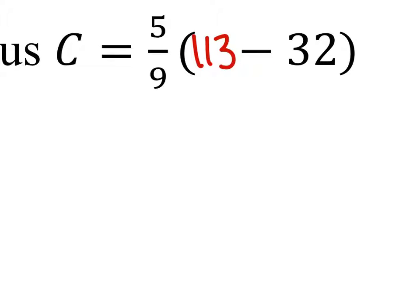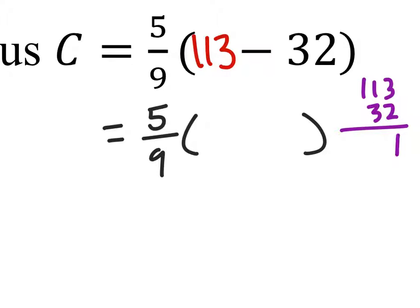By the order of operations, we'll need to do the parentheses first. So 113 minus 32. We can do it over here. 113 minus 32. That's 81.